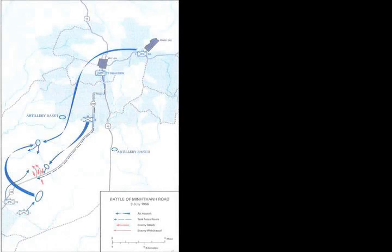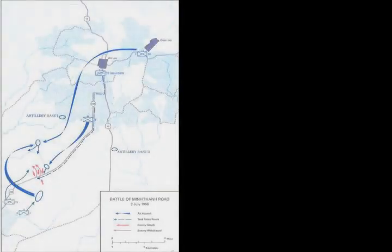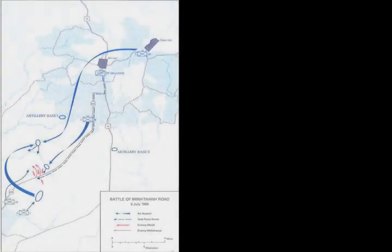The Viet Cong, primarily armed with RPG-2, recoilless rifles and small arms, engaged and destroyed some vehicles in the initial column but were pushed back by the combined reaction force. The attacking Viet Cong unit was able to fall back using the heavy jungle in the area as cover.